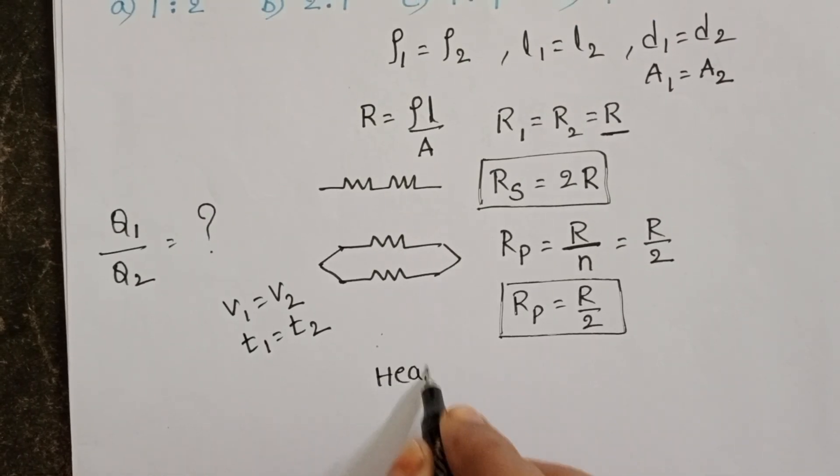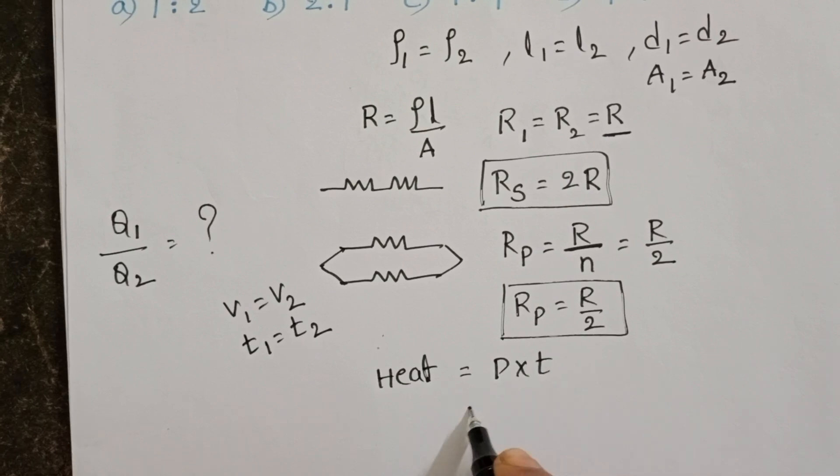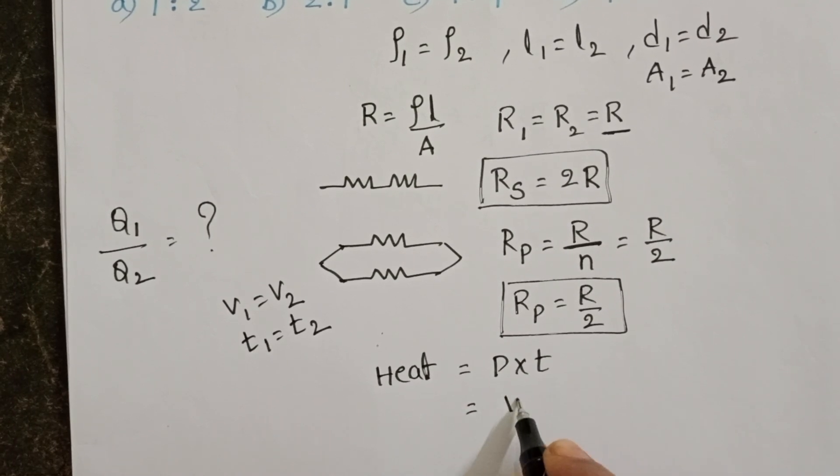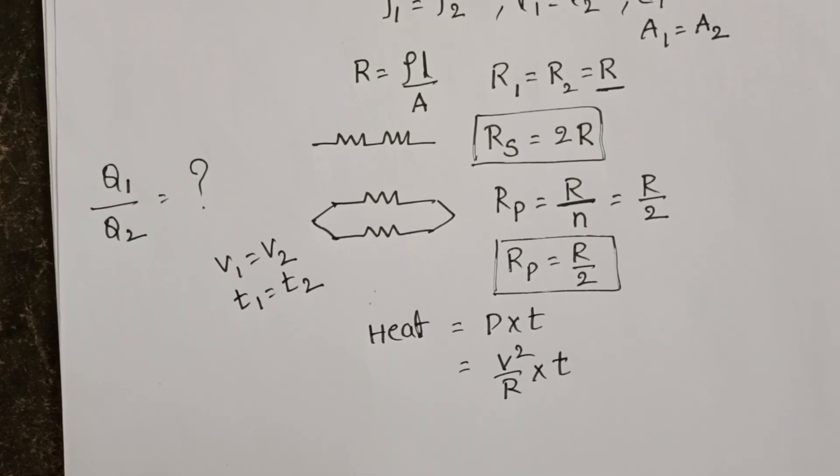Heat equals power into time. In place of the power, take V square by R. Why? Because we don't know the electric current. So, take the formula. Heat equals V square by R into time.